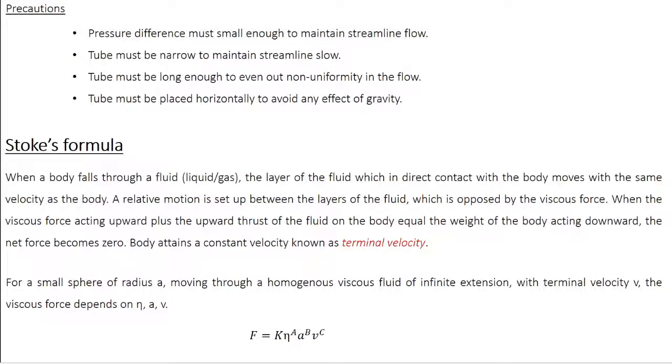At one point, all these forces are going to balance each other. The total downward force due to the weight of the body is balanced by the total upward force due to viscous force plus upward thrust. At this point, the net force on the body is zero, acceleration is zero, which means the velocity of the body is constant. This velocity is known as terminal velocity.